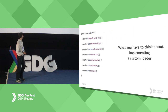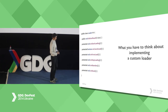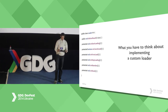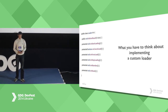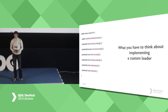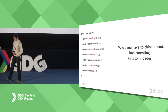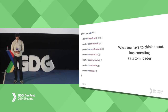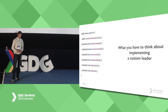But what happens if you want to create your custom Loader? You dive into the Loader documentation more deeply and find that there are a few implementations of the Loader abstract class — AsyncTaskLoader and CursorLoader. But then you will face the problem that there are too many different methods you have to implement, and you do not actually understand why.